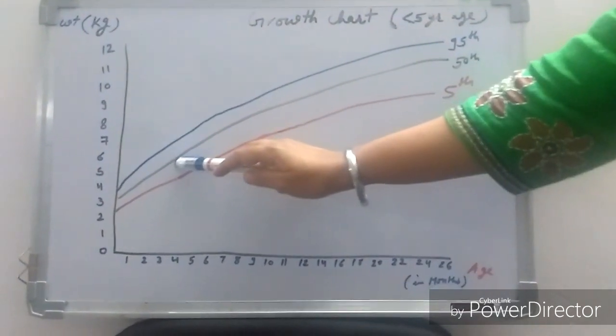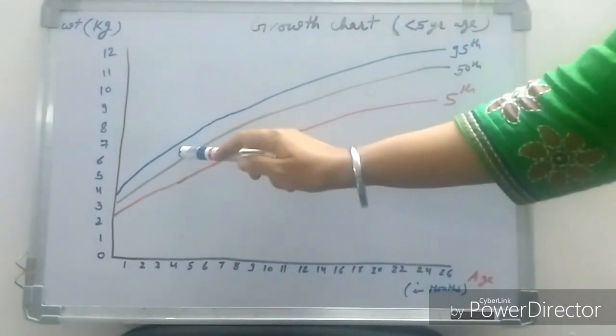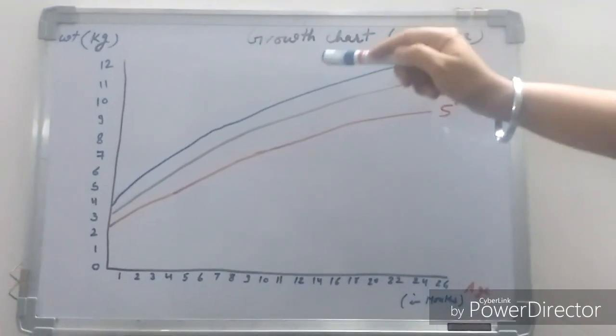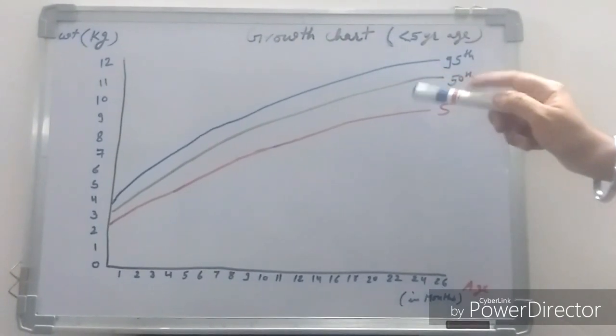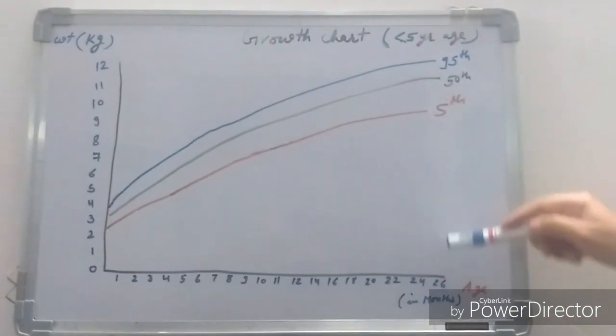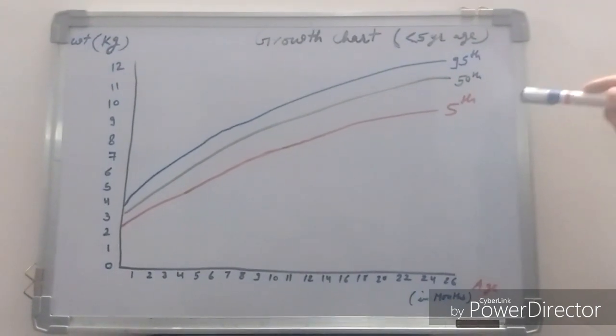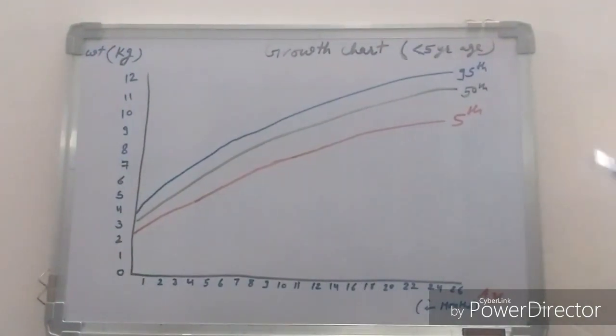The graph should be upward always. If baby is not gaining weight and the graph is going down, the slope is going down, that means we should find out the cause and treat properly. This growth chart is very important for the growth assessment of the baby and to educate the mother for the nutritional status of the baby.